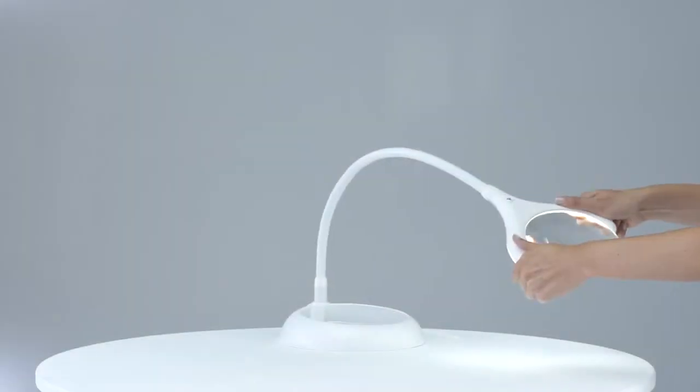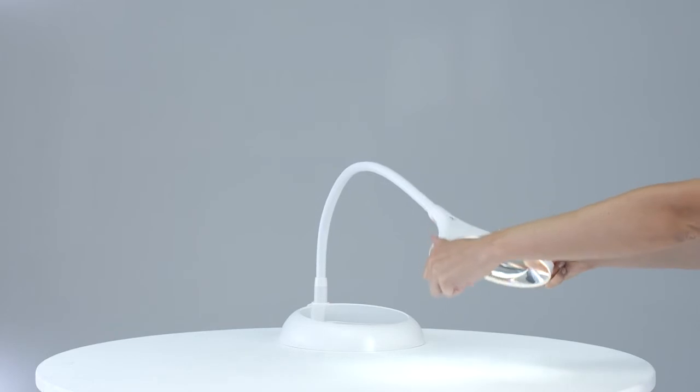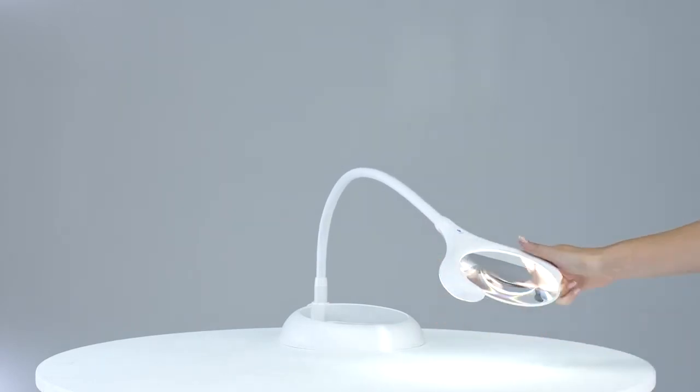The flexible arm allows light to be positioned exactly where it is needed, whether you're working at a table, chair or sofa.